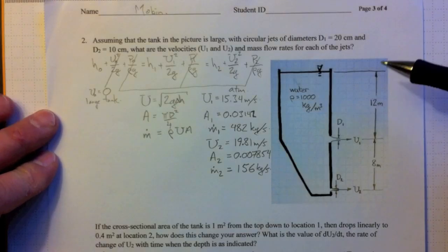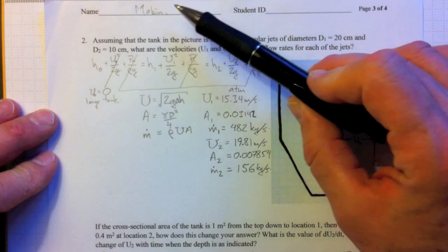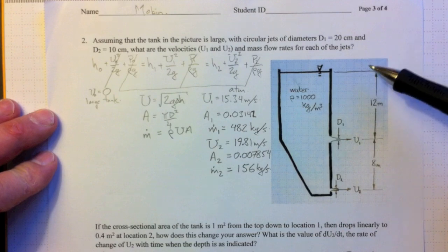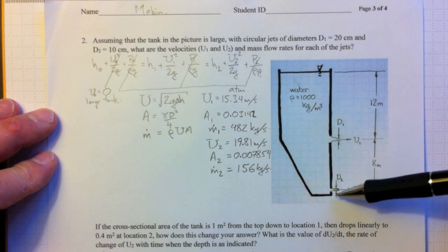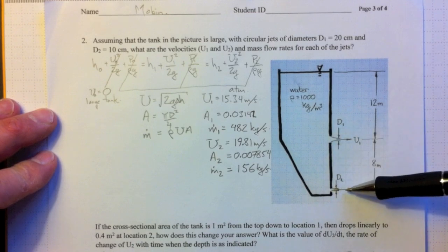This is the second quiz question, and it's going to be marked by Mobin, so see Mobin if you have any further queries. The idea here was that we had a tank shaped like this, with two jets coming out of it.